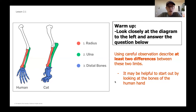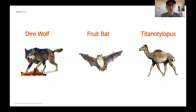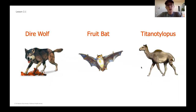We're going to move on to thinking about some of the differences between three species in particular. I think it was four lessons ago we started to practice sorting animals and thinking about some of the differences between them. Three that we're going to zoom in on today are the dire wolf, the fruit bat, and the titanolophus, which is a creature that looks similar to a camel.